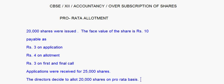The directors decide to allot 20,000 shares on pro rata basis. So 20,000 shares were issued, face value ₹10, payable ₹3 on application. The first entry is: Bank Account debit to Share Application Account. Since 25,000 applications were received, that is 25,000 × 3 = ₹75,000.